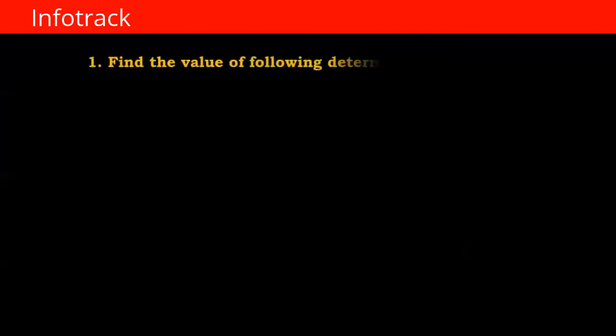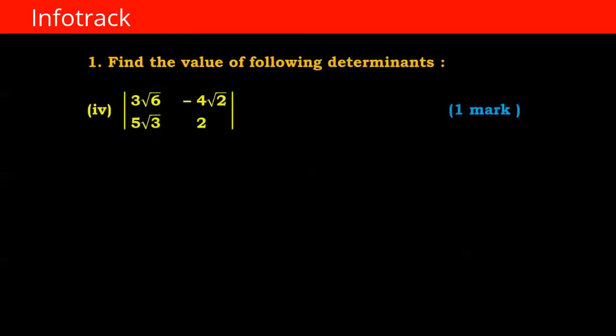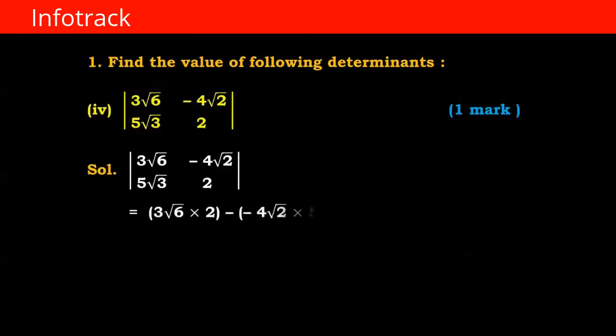See the next question, question number 1, question number 4. We have to find the value of this determinant: 3√6, minus 4√2, 5√3, 2. We cross multiply: 3√6 into 2 minus (minus 4√2 into 5√3). So 3 into 2 gives 6√6, and minus 4 times 5 gives minus 20, with minus 20√6.